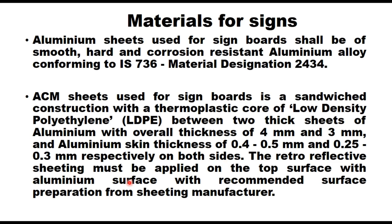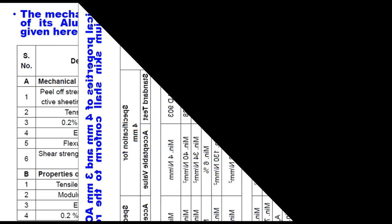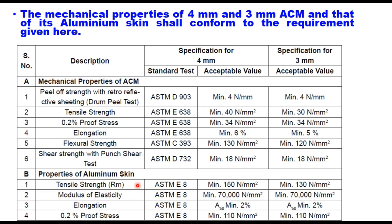The retro-reflective sheeting must be applied on the top surface of the aluminum with recommended surface preparation from sheeting manufacturers. The mechanical properties of 4 mm and 3 mm aluminum composite material and of its aluminum skin should conform to the requirements given in this table. These are the requirements for mechanical properties of ACM, these are the properties of aluminum skin, and these are the standard test procedures and acceptable values for 4 mm and for 3 mm.